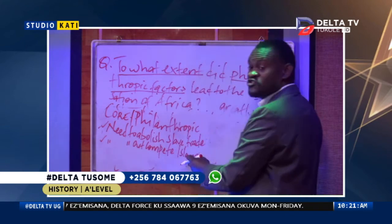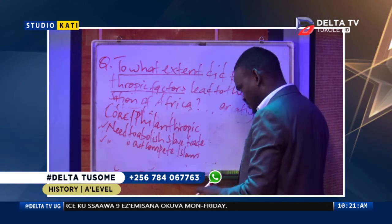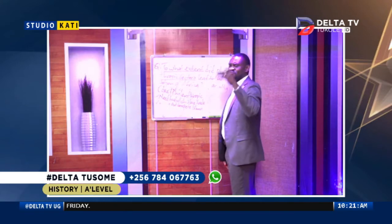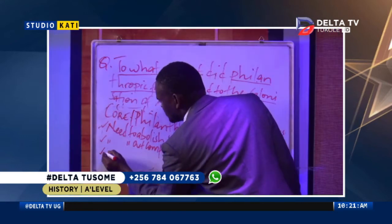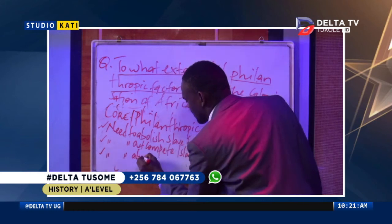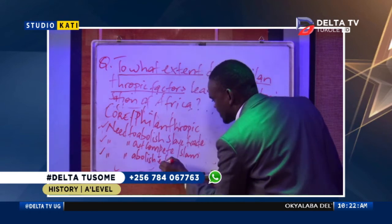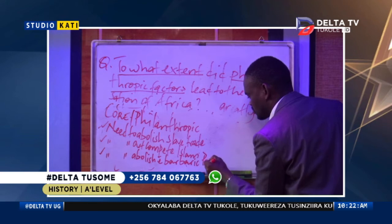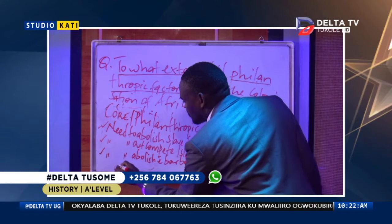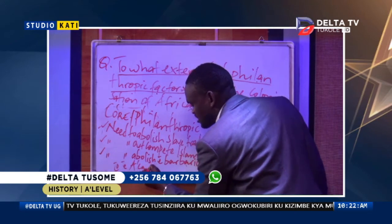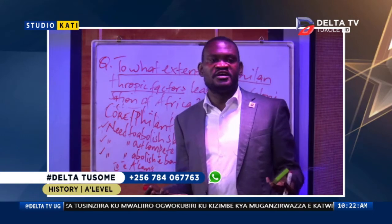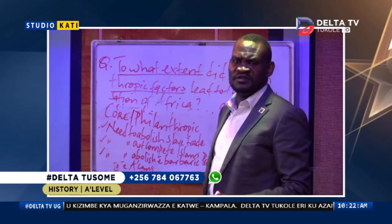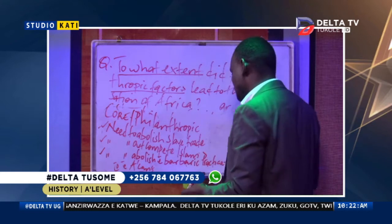Islam was the first alien religion in Africa, having a lot of impact in West Africa and North Africa. Then we can talk about the need to abolish the barbaric practices of the Africans, such as murder of twins, human sacrifice, and cannibalism — aspects found in societies such as among the Ibo and the Aruba in West Africa.